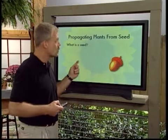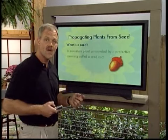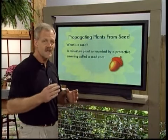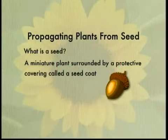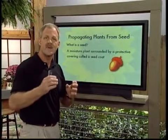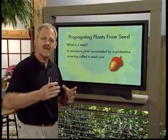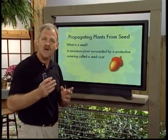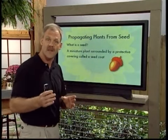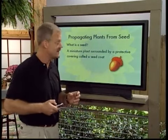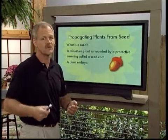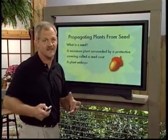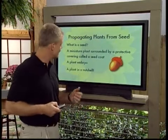Where do we start with seed propagation? We start with this question: what is a seed? In plant science books, the definition of a seed goes something like this: it's a miniature plant surrounded by a protective covering called a seed coat. It's an entire plant in miniature — if you take a hundred seeds and put them in a small bag, you're really carrying around a hundred separate plants. I like to call it a plant in a nutshell.